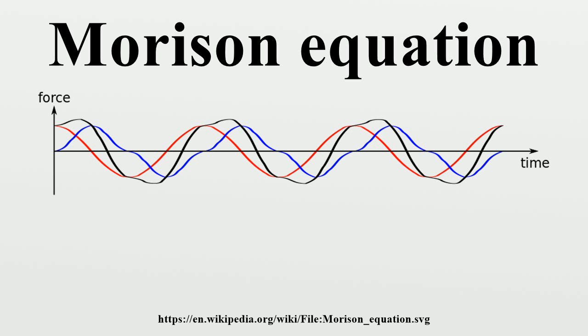The descriptions given below of the Morrison equation are for unidirectional flow conditions as well as body motion.